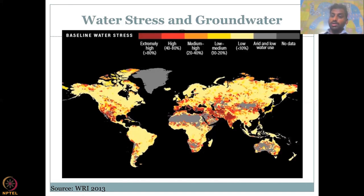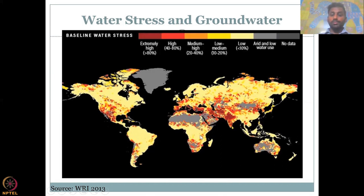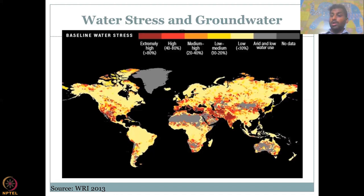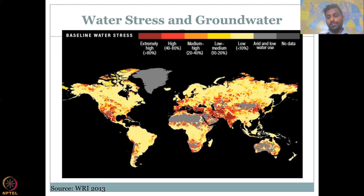Why would someone spend energy to extract groundwater? It's when you have water stress. If a region has good groundwater resources, they won't use it until there is a stress. For example, where you have good dams and water connections as in the US and China, you don't see much water stress. Only when water is not enough would you spend energy — electric energy, diesel pumps, fossil fuel burning pumps, or solar energy — to extract groundwater.